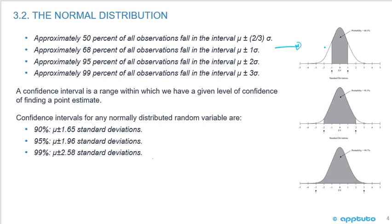So here we can see 68% of the observations are going to fall within the mean, plus or minus one standard deviation. Here we're going to have 95% are going to fall within plus or minus two standard deviations.